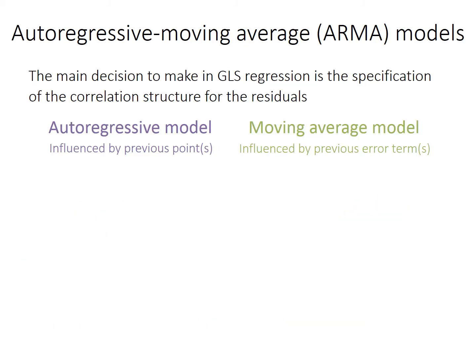The math is handled behind the scenes by the computer. The main decision when doing generalized least squares is choosing an appropriate correlation structure for the residuals. The general form of this model for time series is called an autoregressive moving average, or ARMA, model. It can have an autoregressive component, a moving average component, or a combination of both. Points in an autoregressive model are influenced by the position of the previous point or points; in a moving average model, they're influenced by the previous error term or terms. They can be influenced by just the one immediately preceding — a first-order model — or by the preceding two values — a second-order model — and so forth.